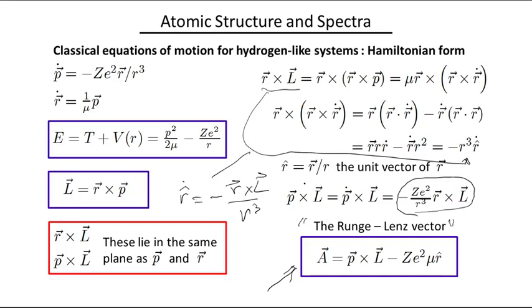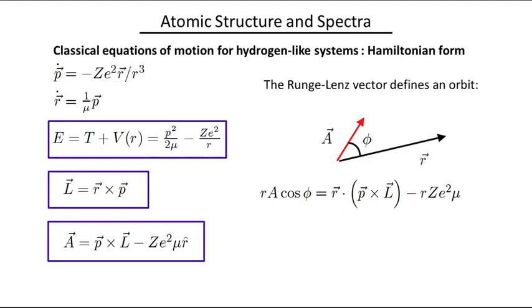This is often called the Runge-Lenz vector. There's a Wikipedia article on this that's very useful, very readable, very informative. But I hope I've given you a path to re-deriving it. Actually, when you know that something exists, when you know that there's something involving p cross L that results in a constant of motion, then you should be able to calculate it again for this system.